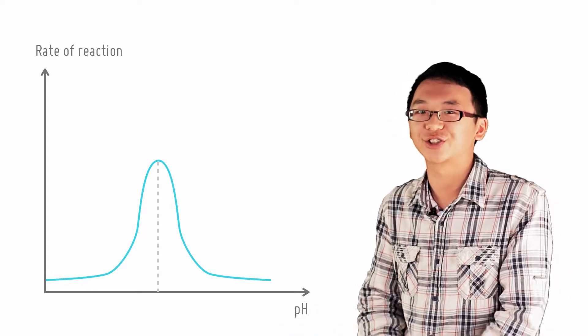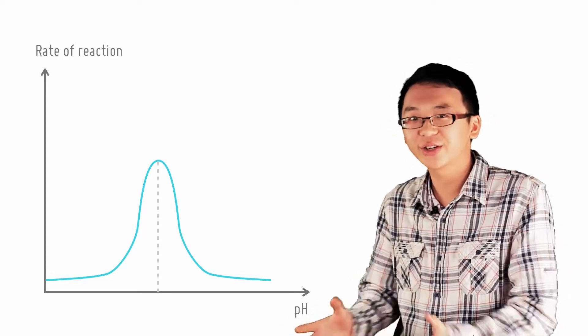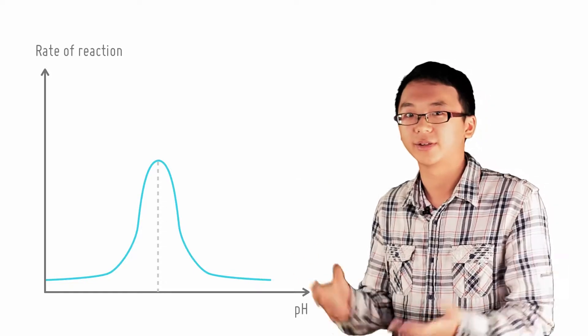Now let's look at the graph of rate of reaction against pH, which generally has a symmetrical shape. Thank goodness.